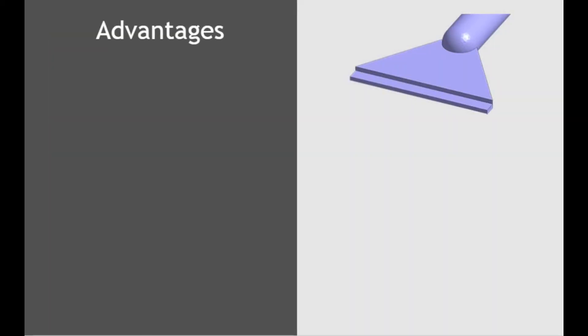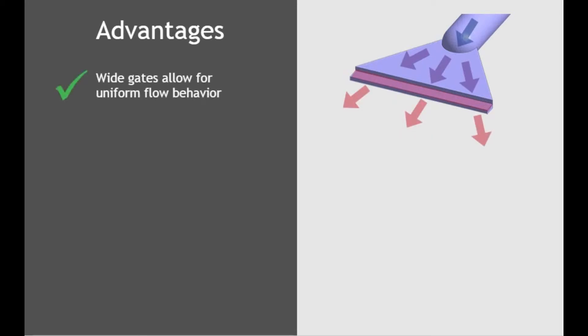There are many advantages to the fan gate design. With fan gates, polymer melt flows from a cold runner into the fan, into the gate, and then into the part. Because fan gates are wide, they allow for uniform flow behavior into a part. Due to this flow behavior, the material molecules are uniformly oriented, so packing, cooling, and shrinkage behaviors are uniform.